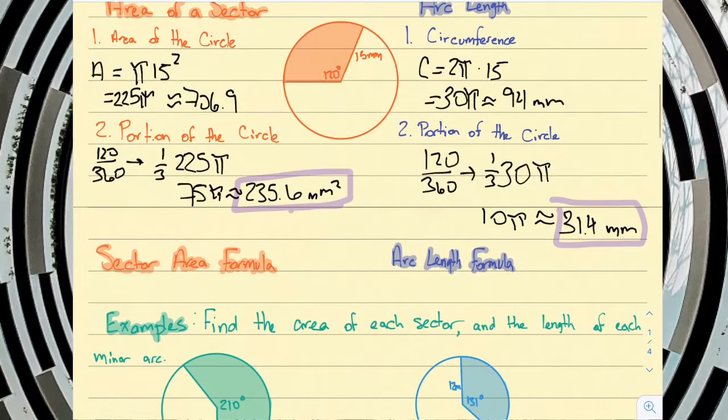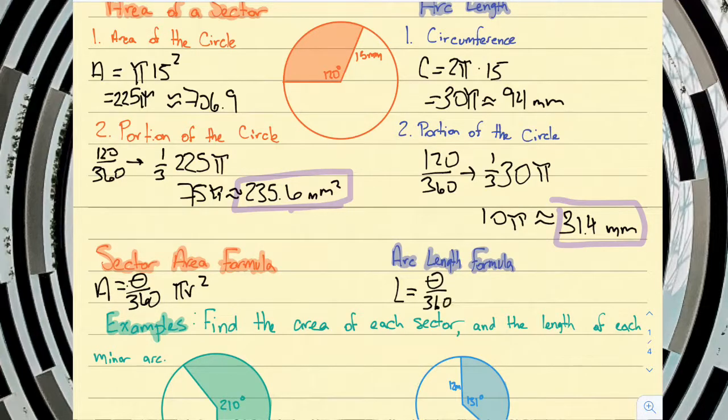All right, so now that we've figured out how to find the area of a sector and length of an arc, we'll get the actual formulas. So sector area is our central angle divided by 360. That tells us the portion of the circle we're looking at. And then we'll multiply that by the area of a full circle. So it's our angle out of 360 multiplied by πr². And arc length is very similar. We'll take our angle out of 360, because that tells us what portion of the circle we're looking at, and then we'll multiply that by our circumference, 2πr.